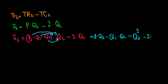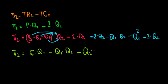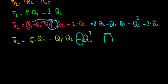Subtracting 2Q2 from 8Q2 gives 6Q2, so the profit simplifies to: 6Q2 minus Q1·Q2 minus Q2 squared. We notice this is a function of Q2 — a concave parabola — so we're looking for the peak where the slope equals zero. That means we differentiate the profit of the second player with respect to Q2 and set it equal to zero.